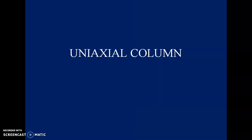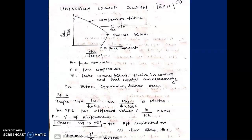Next, we design a uniaxial column. Now we have two forces to deal with: the axial load and the uniaxial moment — moment from one direction, either Mx or My. This is essentially the interaction curve that a compression member follows, plotted between Mu/(fck·B·D²) on the y-axis and Pu/(fck·B·D) on the x-axis.